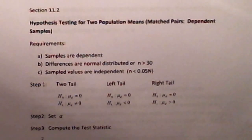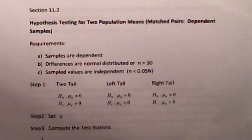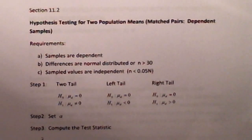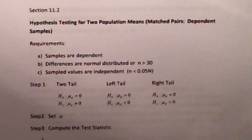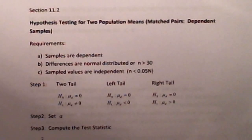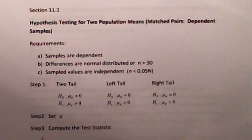Welcome everybody to week number 13. This will be module 13 as we will cover sections 11.2 and 11.3 this week. Last week we looked at hypothesis testing for two population proportions. This week it's hypothesis testing for two population means.